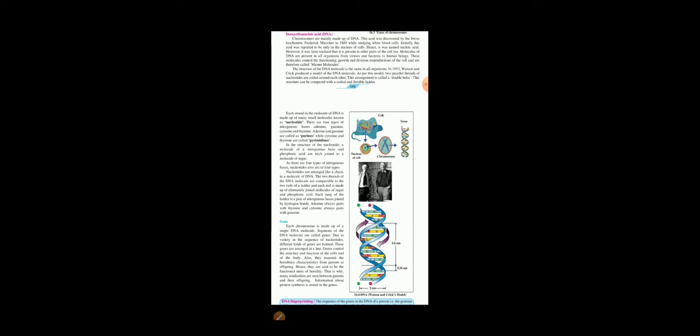Let us study about it more. Chromosomes are mainly made up of DNA. This acid was discovered by the Swiss biochemist, Frederick Mescher, in 1869, while studying the white blood cells. Initially, this acid was reported to be only in the nucleus of cells. Hence, it was named nucleic acids.